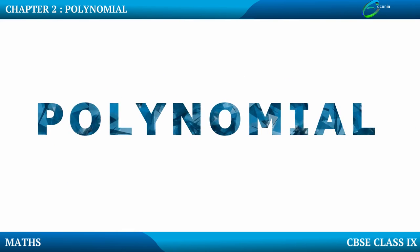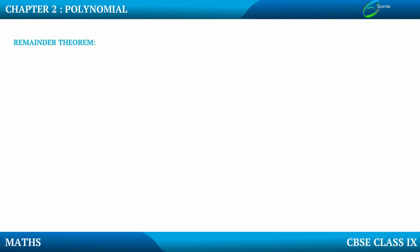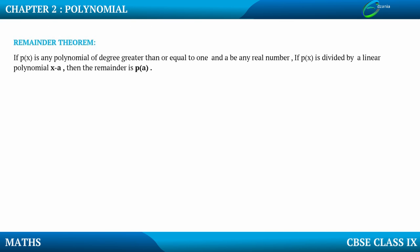Let us begin with chapter 2, polynomials, and move on to the next topic: the Remainder Theorem. Here is the statement: if p(x) is any polynomial of degree greater than or equal to 1, and a be any real number, and if p(x) is divided by the linear polynomial x minus a, then the remainder is p(a).